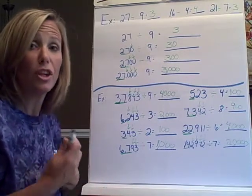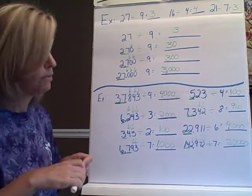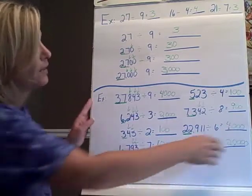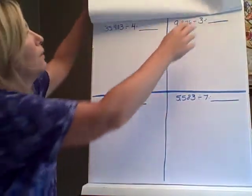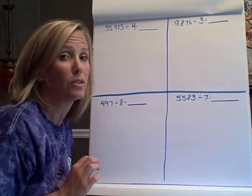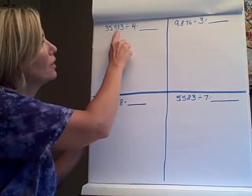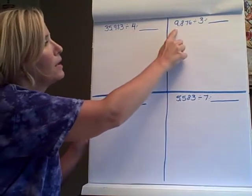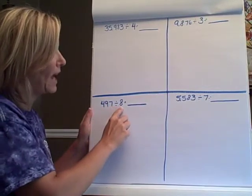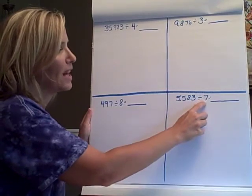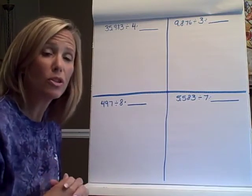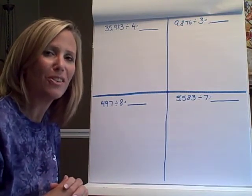Now if you didn't understand something, I want you to go back and review. If you did understand it, I want you to take your notes. I want you to flip them over. Then on the back, I want you to draw 4 boxes. And these are your practice ones. Which I will check tomorrow when we get to school. 35,983 divided by 4. 9,876 divided by 3. 497 divided by 8. And 5,583 divided by 7. Go back. Work 3 or 4 steps. I know you can do it. If you get confused, rewatch the first part of the video. And I can't wait to see how well you do tomorrow. Take care.